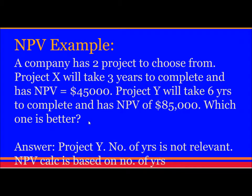NPV Example: A company has 2 projects. Project X will take 3 years to complete and has an NPV of $45,000. Project Y will take 6 years to complete and has an NPV of $85,000. Which is better? Project Y is better because in NPV analysis, the number of years is not the deciding factor — whichever project has the higher NPV is selected. Here, $85,000 is higher, so Project Y is better.